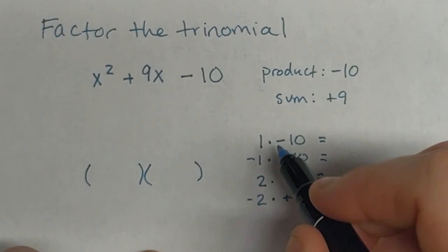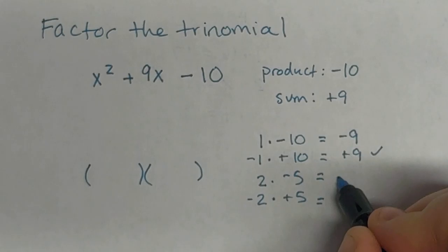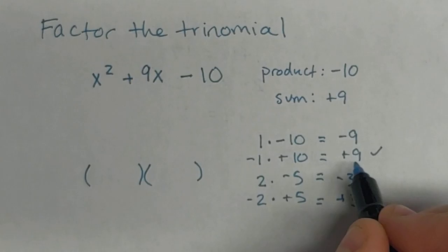Now I'm going to add them and see which one comes up to be positive 9. So 1 plus negative 10 is negative 9. Negative 1 plus 10 is our positive 9, so that's the one I want. The other two would give me negative 3 and positive 3. So now that I've figured out what my two numbers are,